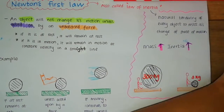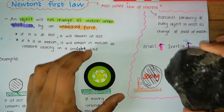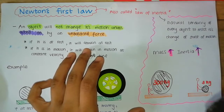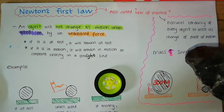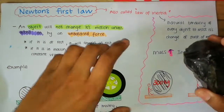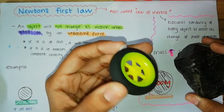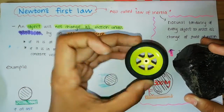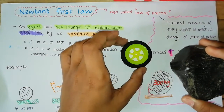So in the situation where we have something with a larger mass we need to apply more force, as it has more inertia. And for something with a smaller mass we need to apply less force because it has less inertia.